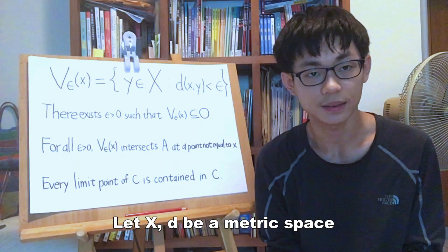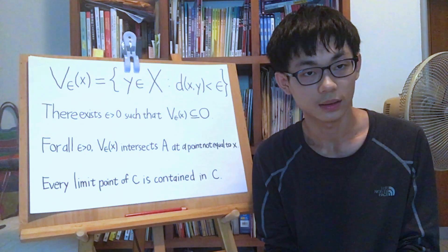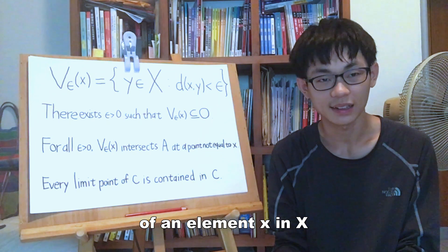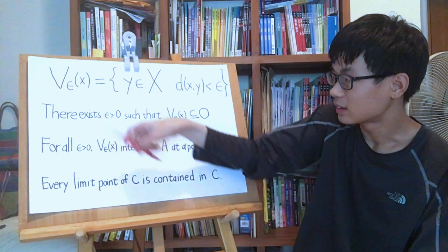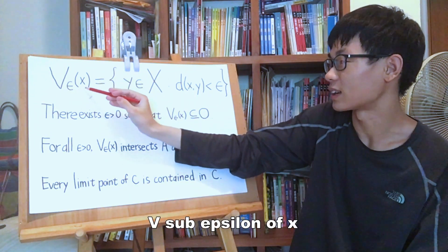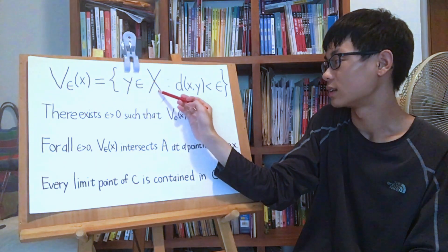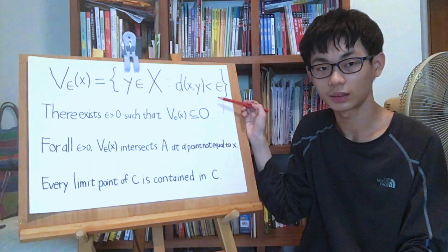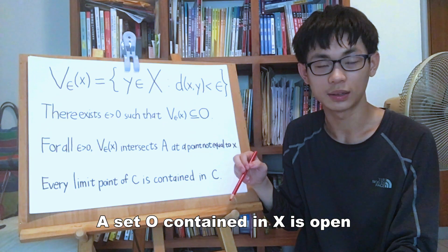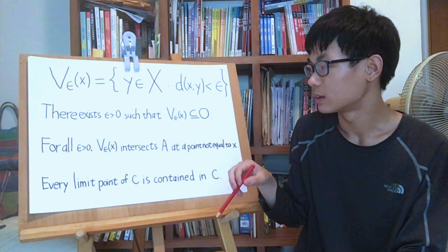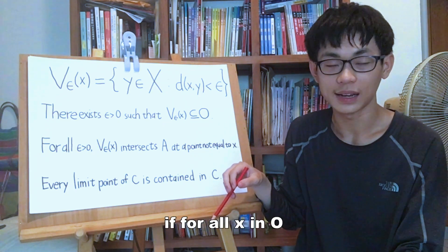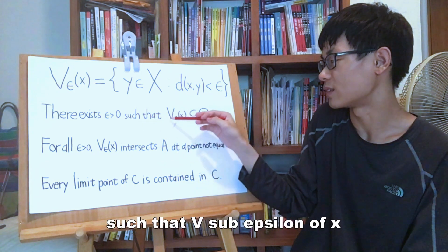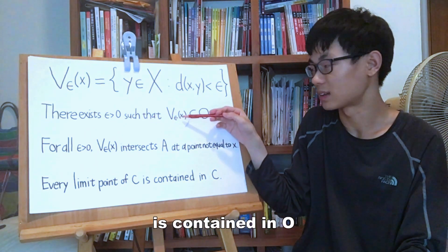Let (X, d) be a metric space. The epsilon-neighborhood of an element x in X is the set V_epsilon(x) equals the set of y in X such that d(x, y) is less than epsilon. A set O contained in X is open if for all x in O, there exists epsilon greater than 0 such that V_epsilon(x) is contained in O.